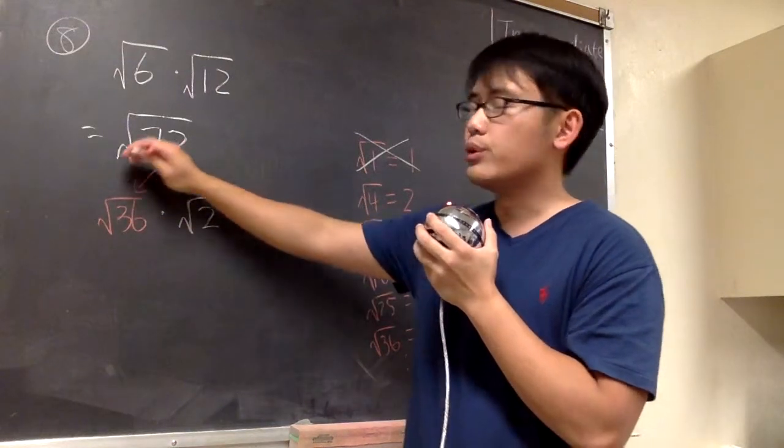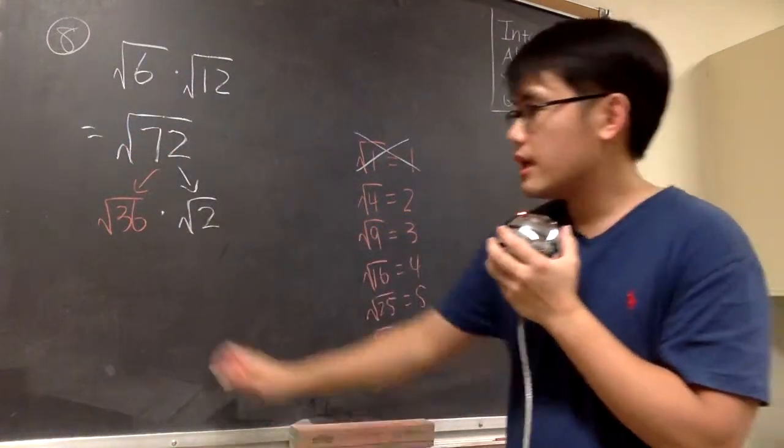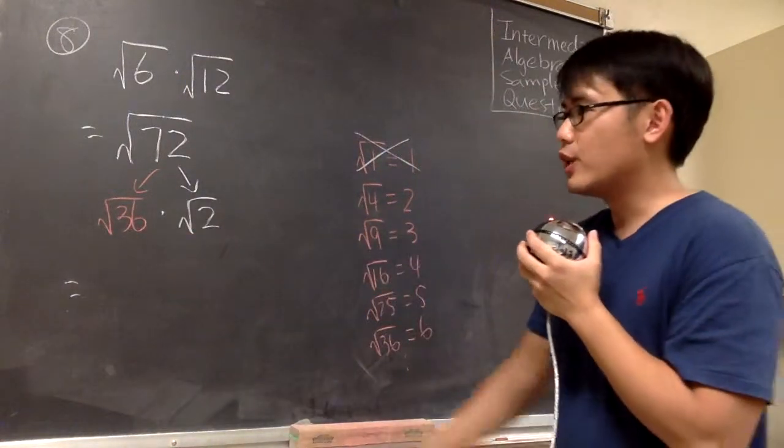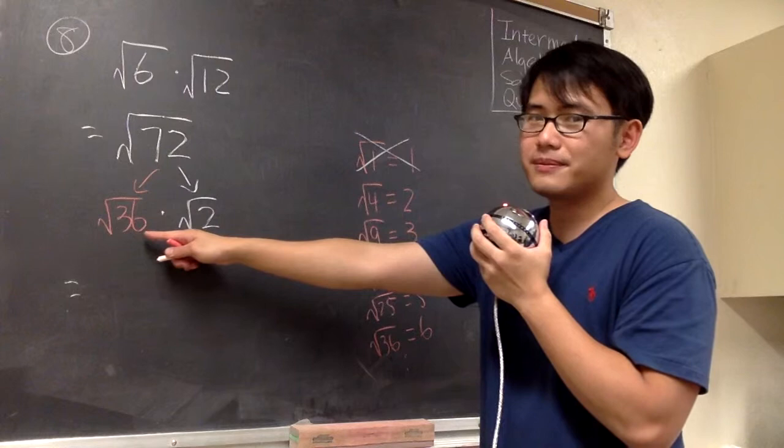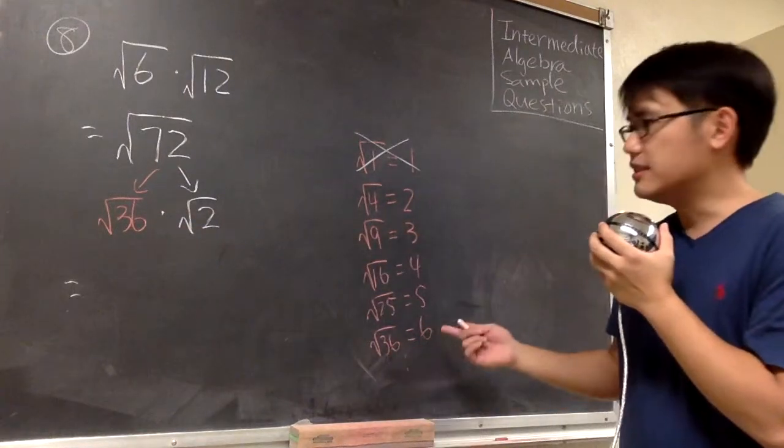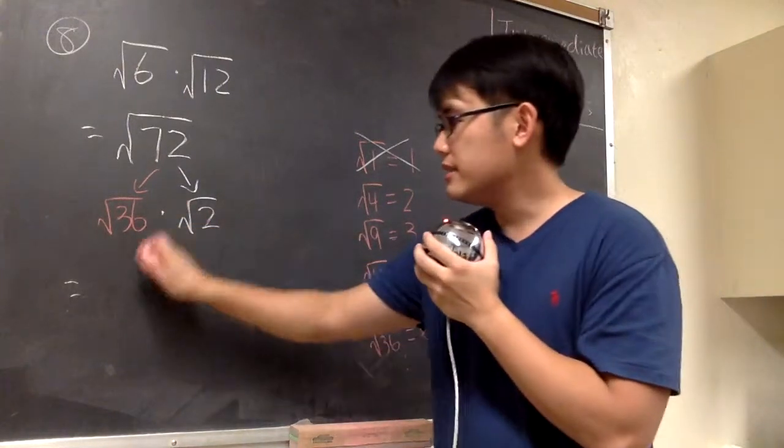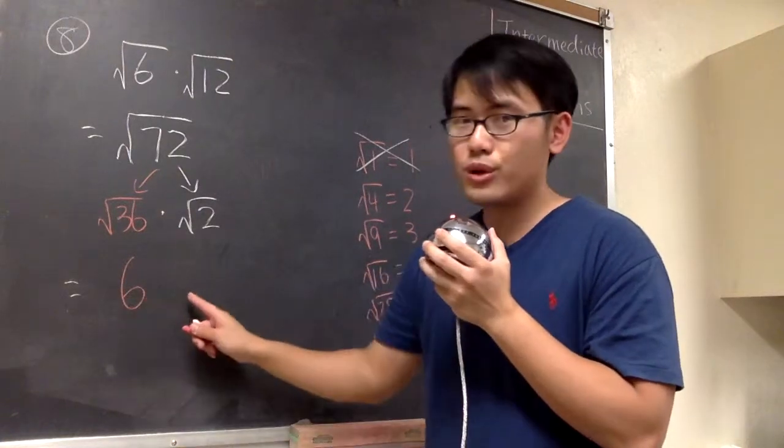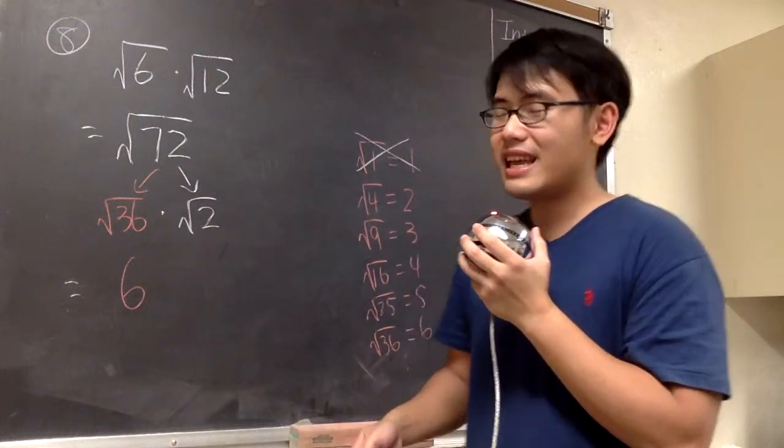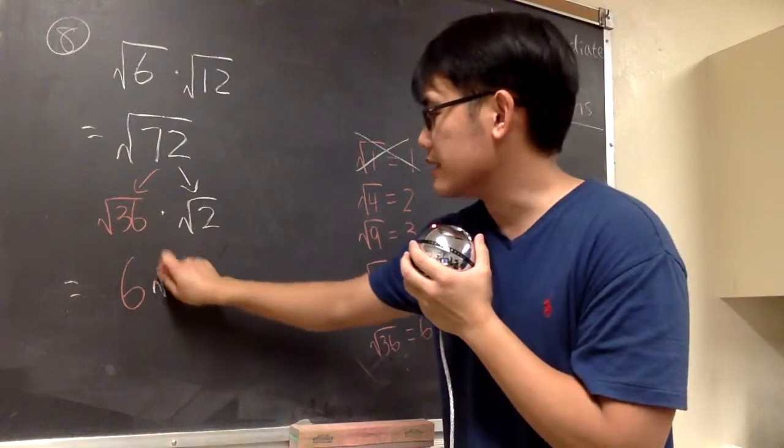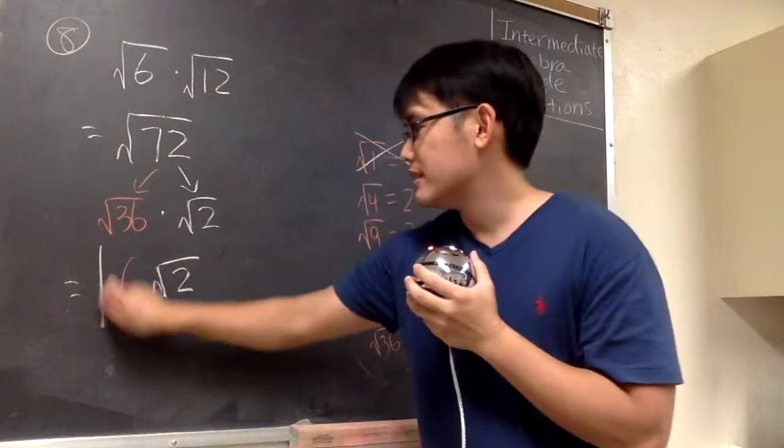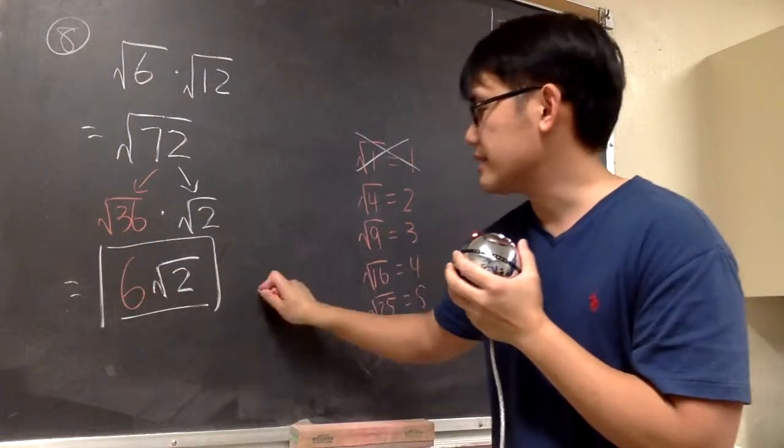These two together will produce the square root of 72. The reason that we want to keep the perfect square in the front is because we actually know what the answer is. Square root of 36 is 6, so we know that this is going to be a regular 6 - notice that there's no more square root, it's just a regular 6. And then we maintain the square root of 2 right next to it. That's it - 6 times square root of 2, and that's the choice C.